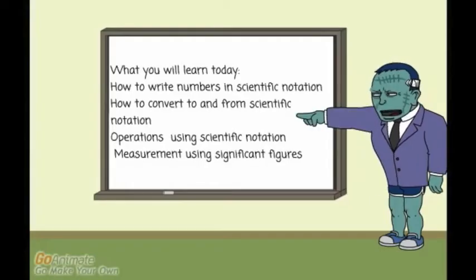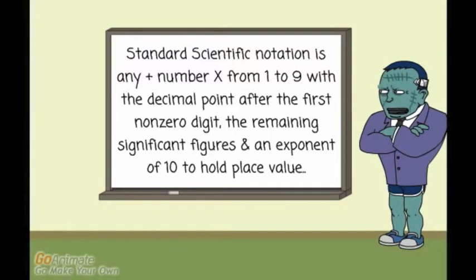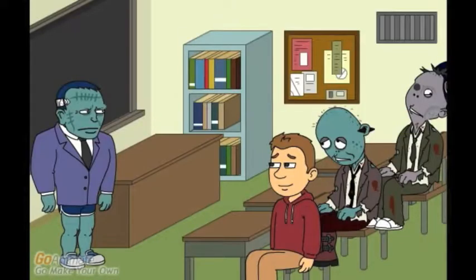Here are the objectives. Read this. Powell, Ferguson, wake up. Standard scientific notation is any positive number x from 1 to 9 with the decimal after the first non-zero digit. After the decimal are the remaining significant figures. An exponent of 10 holds the place value.